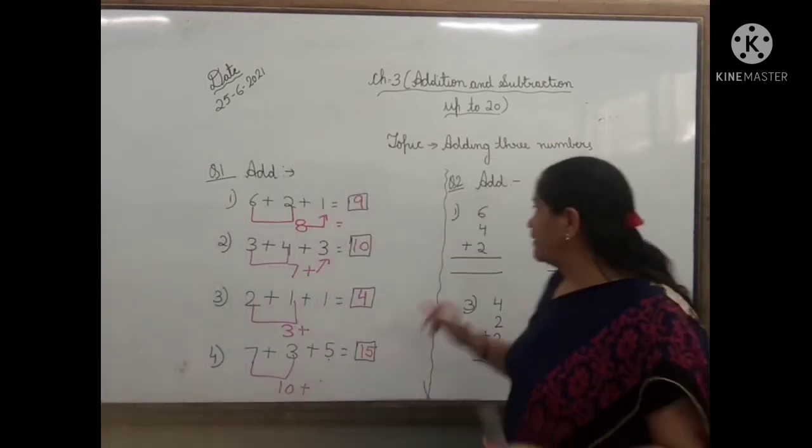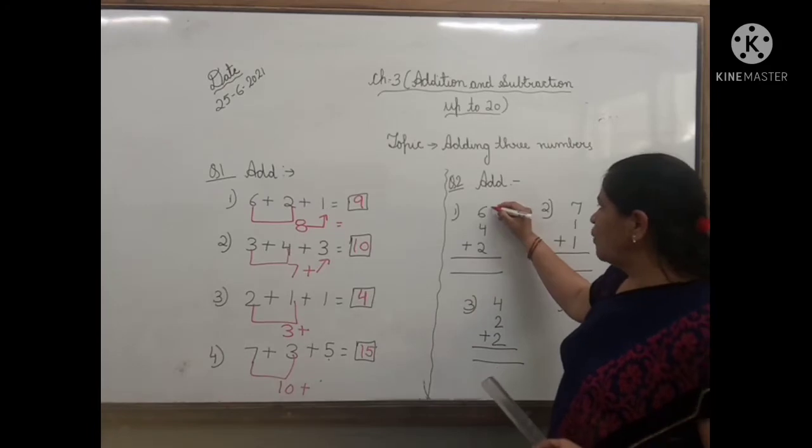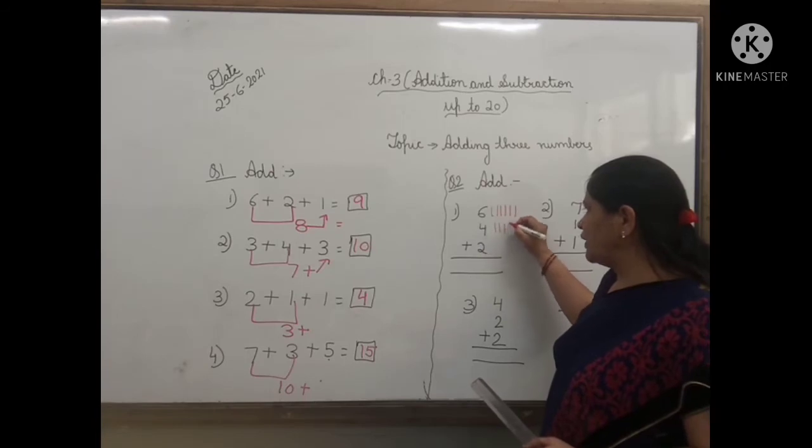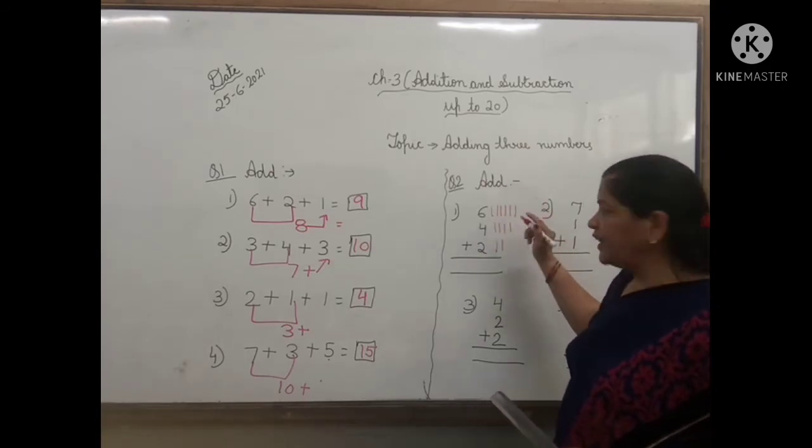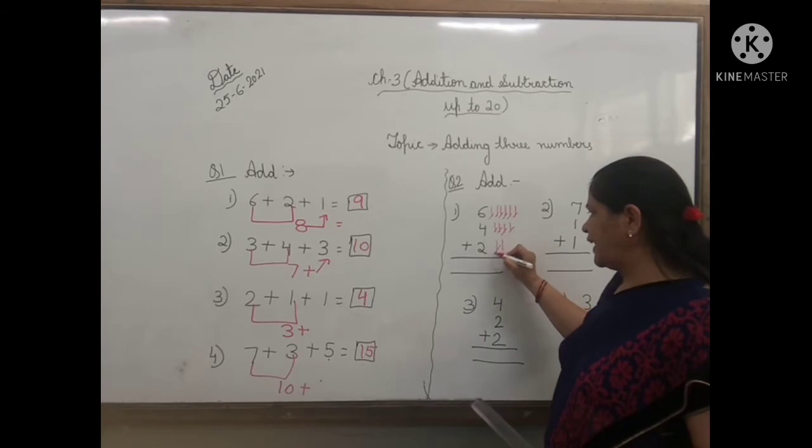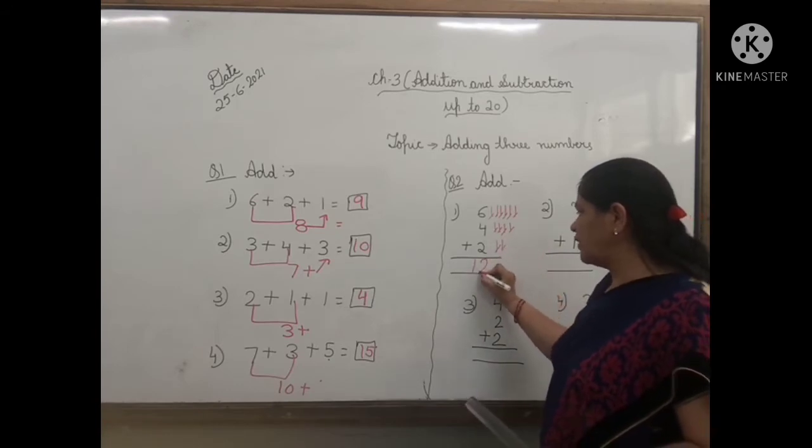Now in question 2, the first one is 6: 1, 2, 3, 4, 5, 6. Second is 4: 1, 2, 3, 4. Then 2: 1, 2. Now count all the lines. 1, 2, 3, 4, 5, 6, 7, 8, 9, 10, 11, 12. So the answer will be 12.